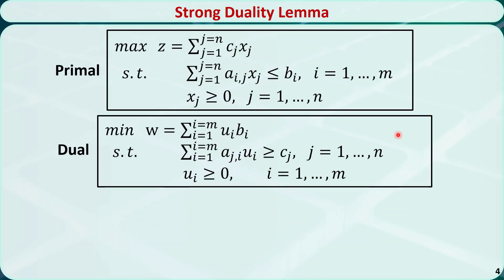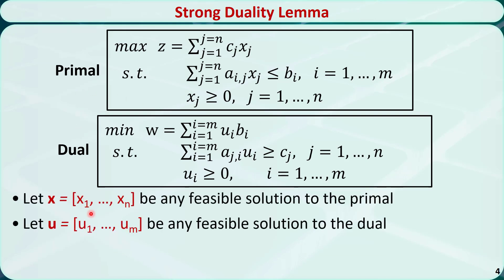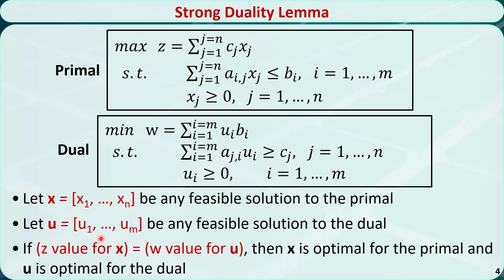Now let's introduce the strong duality lemma. Let x (x1 through xn) be any feasible solution to the primal problem, and let u (u1 through um) be any feasible solution to the dual problem. The strong duality lemma says that if the z value for x in the primal is equal to the w value for u in the dual, then x is the optimal solution to the primal and u is the optimal solution to the dual.